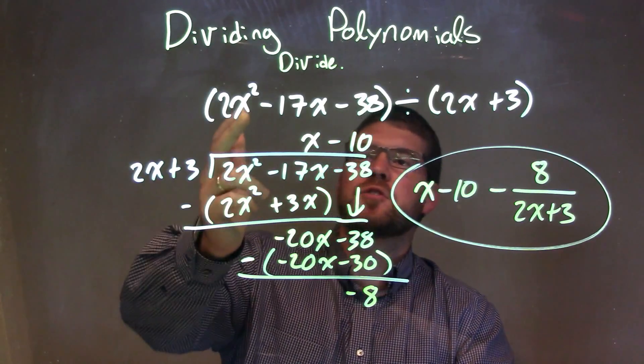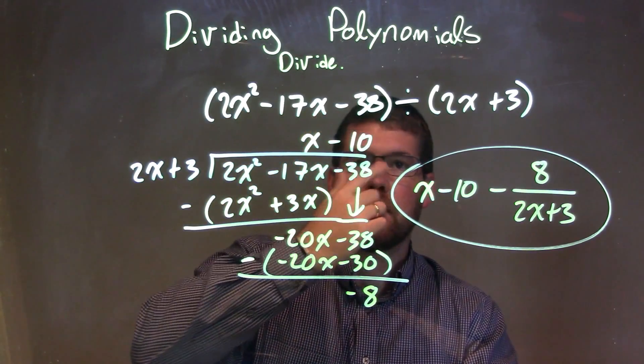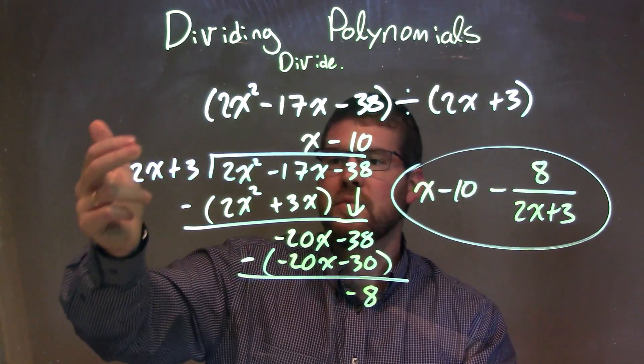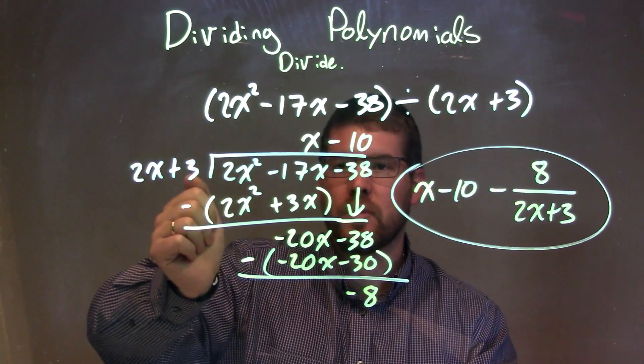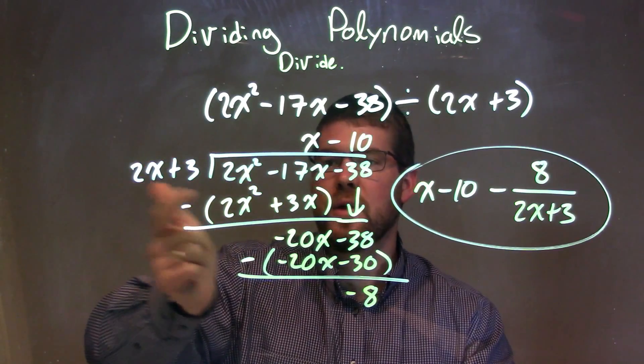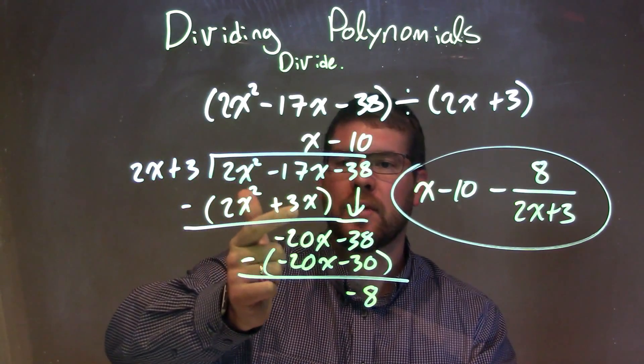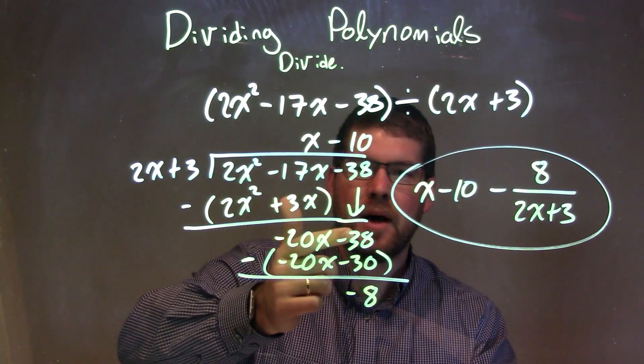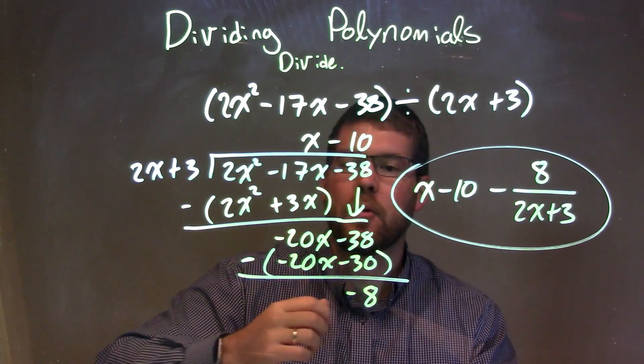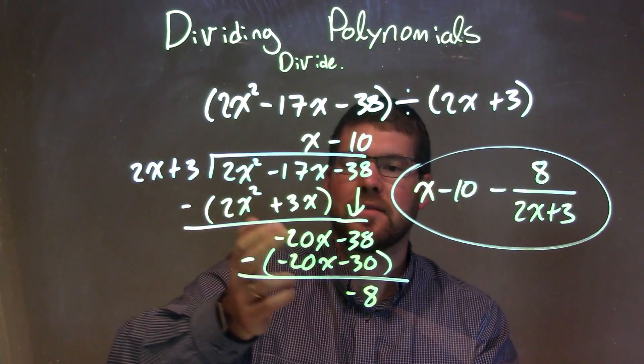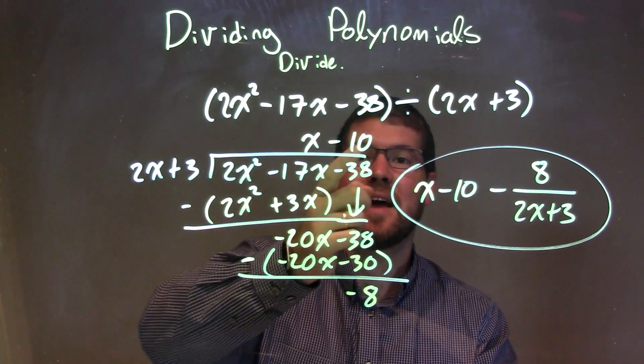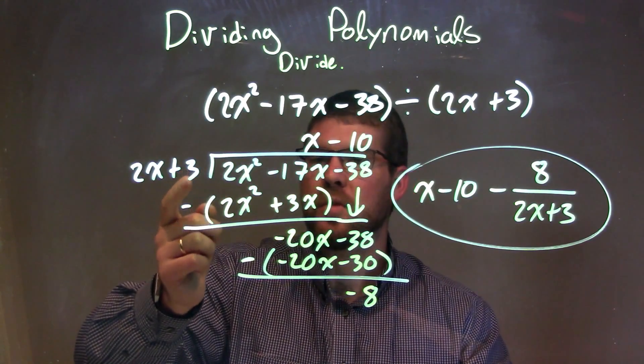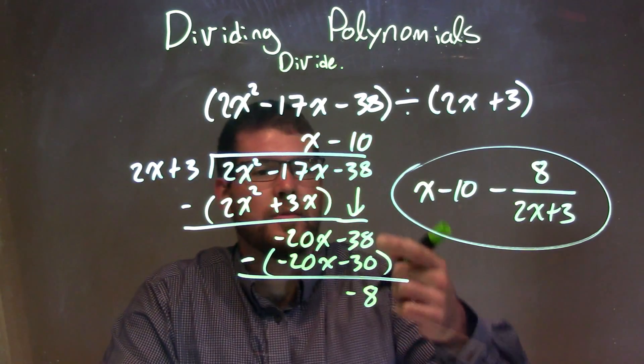Let's recap. We're given 2x squared minus 17x minus 38 divided by 2x plus 3. I wrote it in long division form and asked, what times 2x gives me 2x squared? That's x. So x times 2x is 2x squared, and x times 3 is 3x. I subtract that from the top, which gave me negative 20x. I brought down minus 38 and asked the same question: what times 2x gives me negative 20x? That's negative 10. Negative 10 times 2x is negative 20x, and negative 10 times 3 is negative 30.